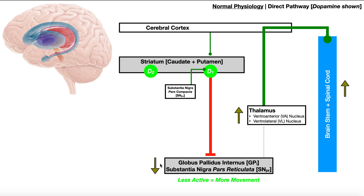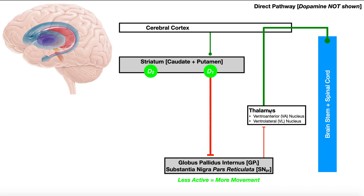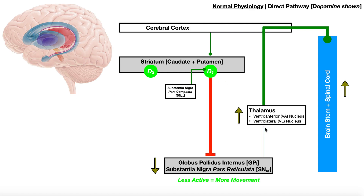So there's even less activity of the globus pallidus internus — and when this is less active, there is more movement. When we add in that dopamine at the D1 receptor, notice there's now less inhibition on the thalamus, so the thalamus is even more active and we get more muscle contraction and more movement. In other words, dopamine from the substantia nigra modulates the direct pathway by producing more movement. Dopamine is pro-movement.